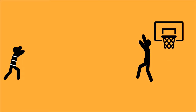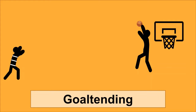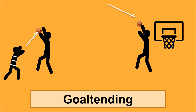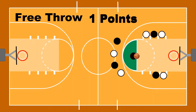You might wonder: what if you have a player who just protects your basket like a goalkeeper in football? That is not allowed — it's called goaltending. When the ball is coming down toward the basket, you cannot block it. But if the ball is going up, you can block it — that's fine. Coming down, you cannot block it. If any of these violations occur, the other team gets the ball.